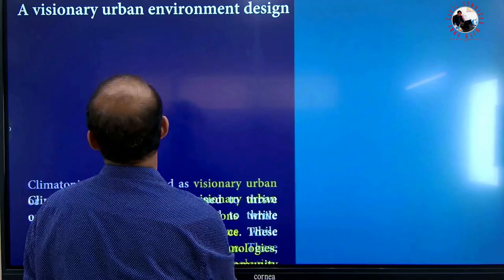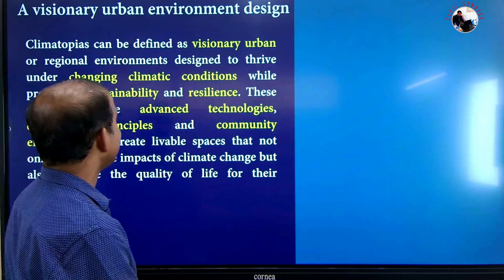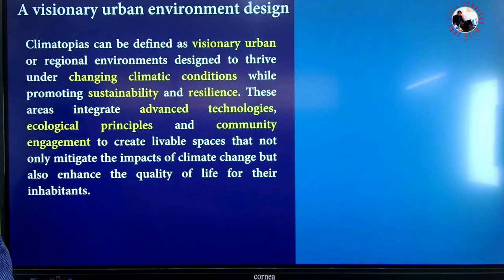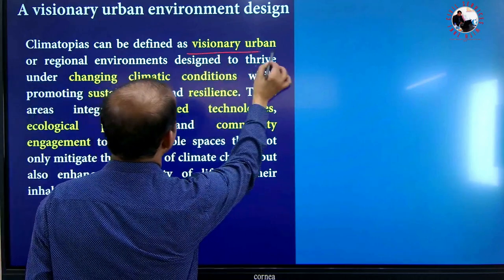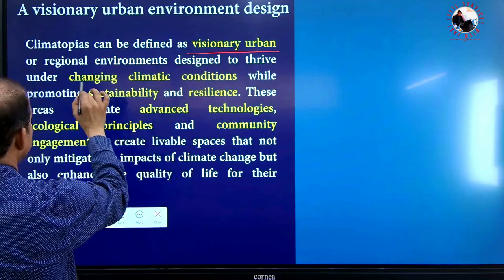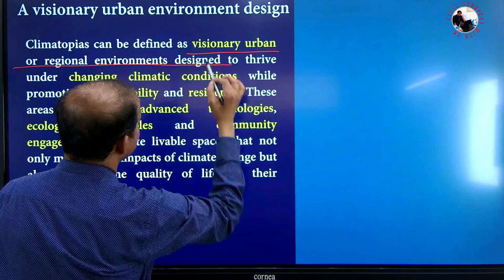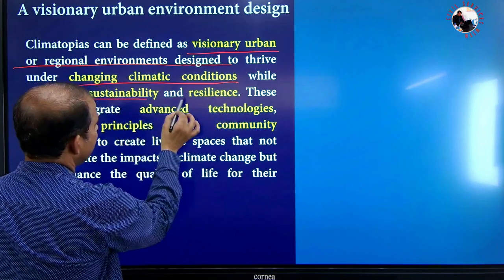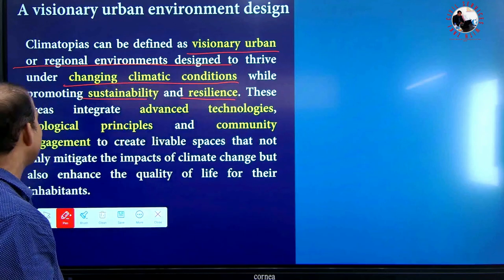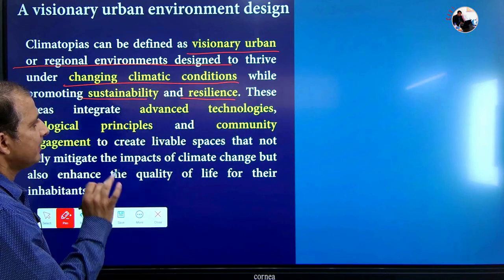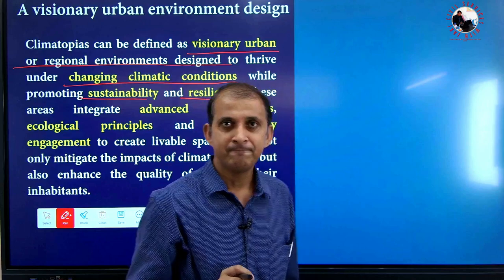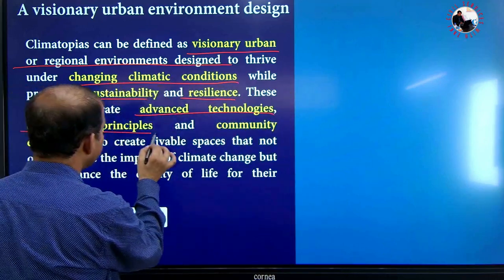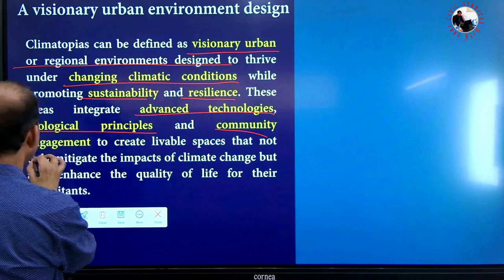Climatopias can be defined as a regional urban environment design where people thrive under the changing climate through sustainability and resilience. These areas integrate three things: advanced technology, ecological principles, and community engagement.